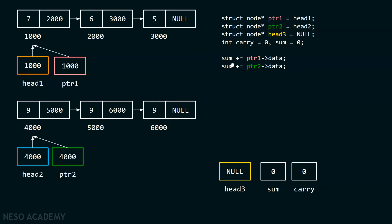We need this step for the purpose of addition: sum += ptr1->data, then sum += ptr2->data. We know that ptr1 data is 7 and ptr2 data is 9. Zero plus 7 gives 7, and then 7 plus 9 is 16, so sum will hold 16. We also have to add the carry to the sum — carry is currently zero, so 16 plus 0 is 16, and this value will not get affected. We cannot simply add 16 to the new node of the resultant linked list because this is not a single digit — we have to obtain a carry from it and pass 1 to the next digits.